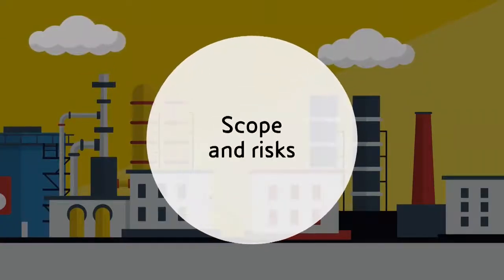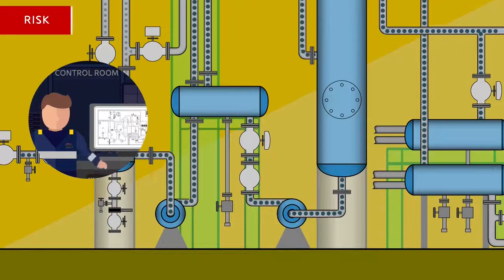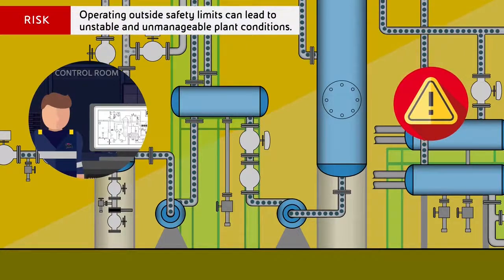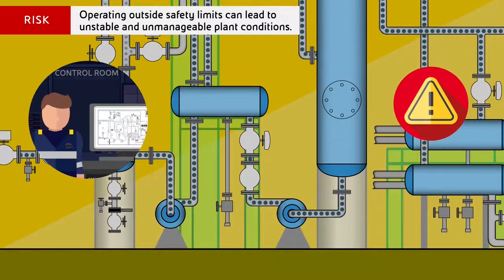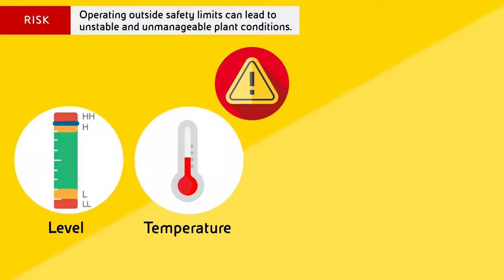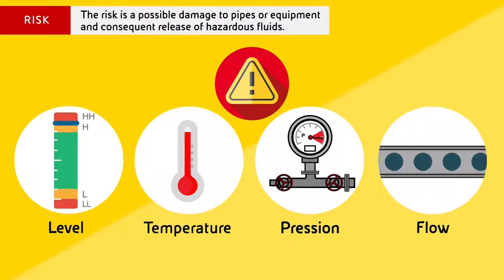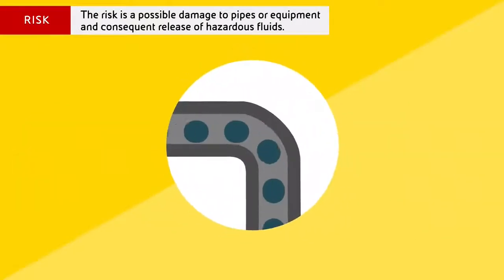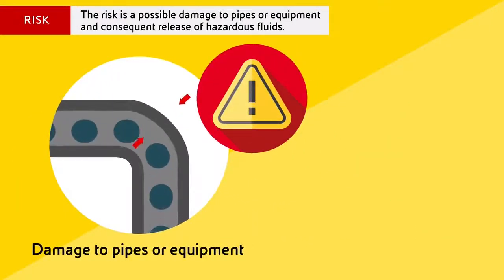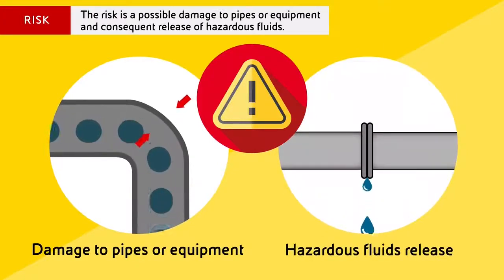Scope and risks. Operating outside safety limits can lead to unstable and unmanageable plant conditions, with the risk of possible damage to pipes or equipment and consequent release of hazardous fluids.